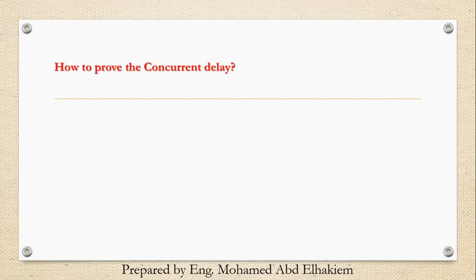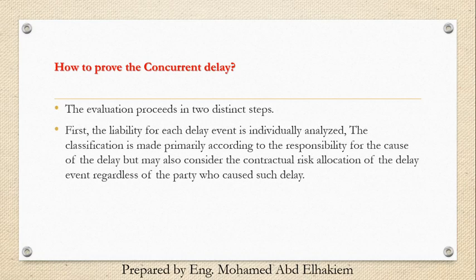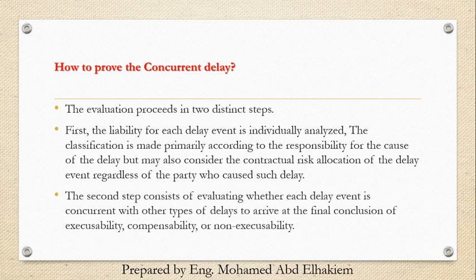How to prove the concurrent delays? The evaluation proceeds in two distinct steps. First, the liability for each delay event is individually analyzed. The classification is made primarily according to the responsibility for the cause of the delay but may also consider the contractual risk allocation of the delay event regardless of the party who caused such delay. The second step consists of evaluating whether each delay event is concurrent with other types of delays to arrive at the final conclusion of excusability, compensability, or non-excusability.